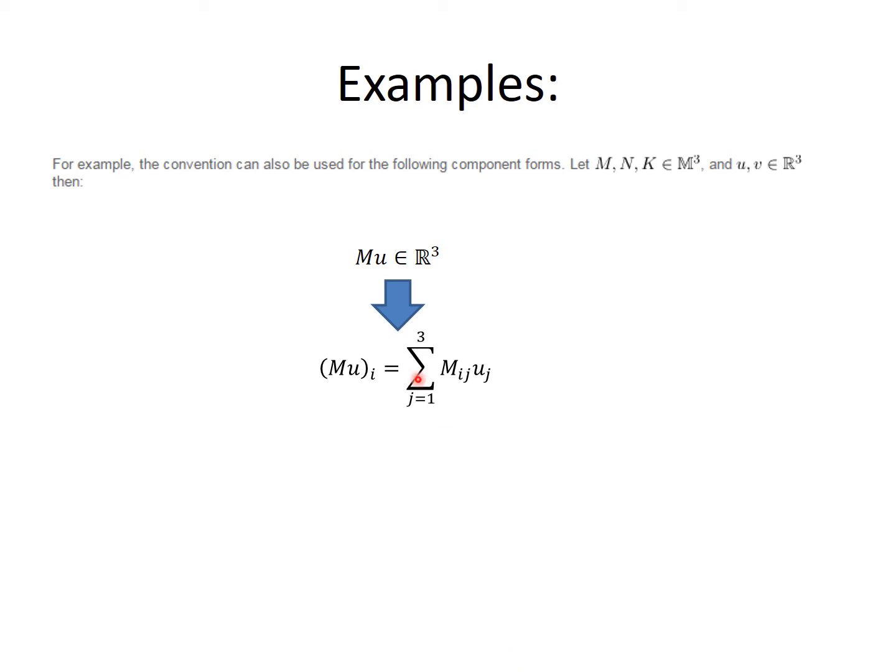We can then drop the sum sign by adopting Einstein's summation convention and write that the ith component of Mu is equal to Mᵢⱼuⱼ.